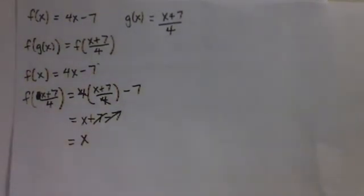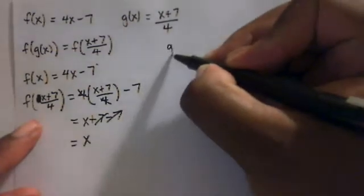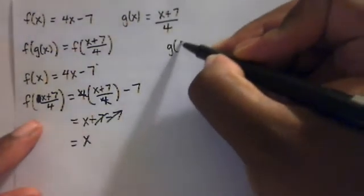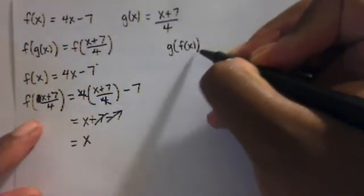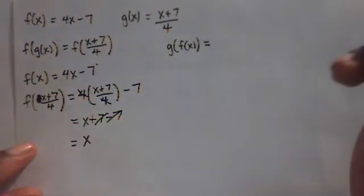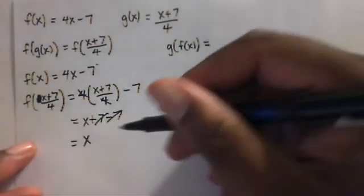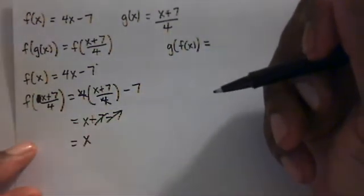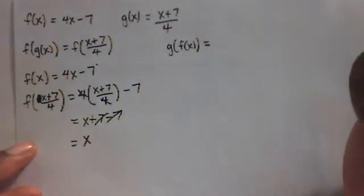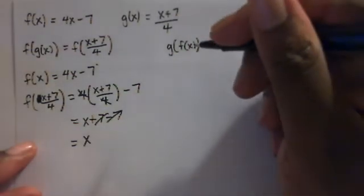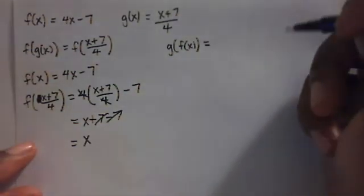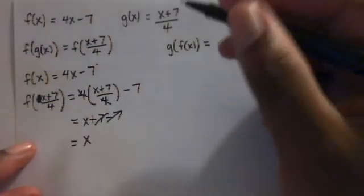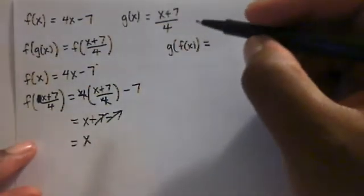So the composition of f with g of x equals x. Now I have to do the composition of g with f of x, which must also give me x. If it does, those two functions are inverses. If it gives something other than x, they can't be inverses.